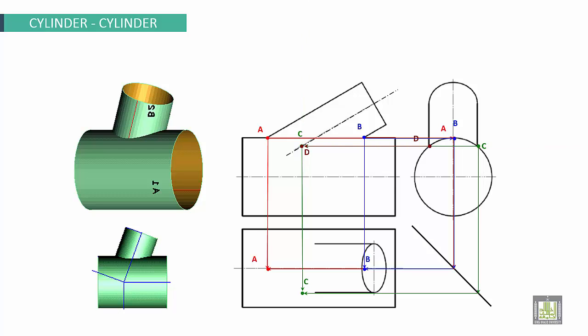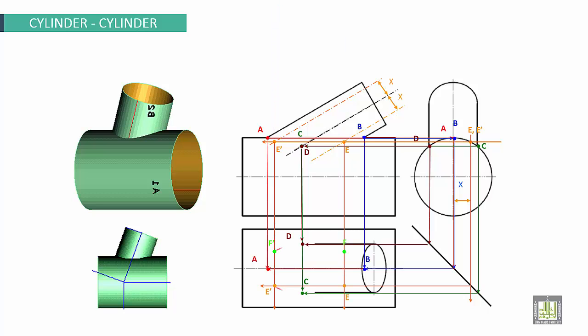Now point D. And here we have point E. E and E dash. Same distance, this is E and this is E dash. F and F dash by the same way, and finally we'll get the intersection shape.